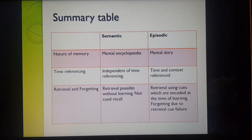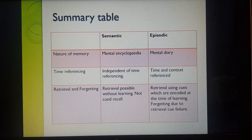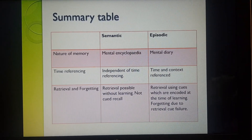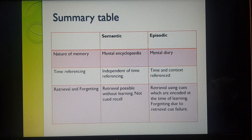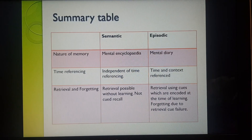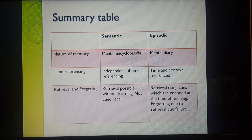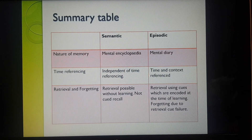This summary table looks at the differences between semantic and episodic memory. The nature of the memory: semantic is like a mental encyclopedia, episodic is like a diary. For time referencing, semantic memory is independent of time referencing — we can learn and recall regardless of time. For episodic memory, time and context act as cues to help us remember. Retrieval is possible without learning cues in semantic memory.